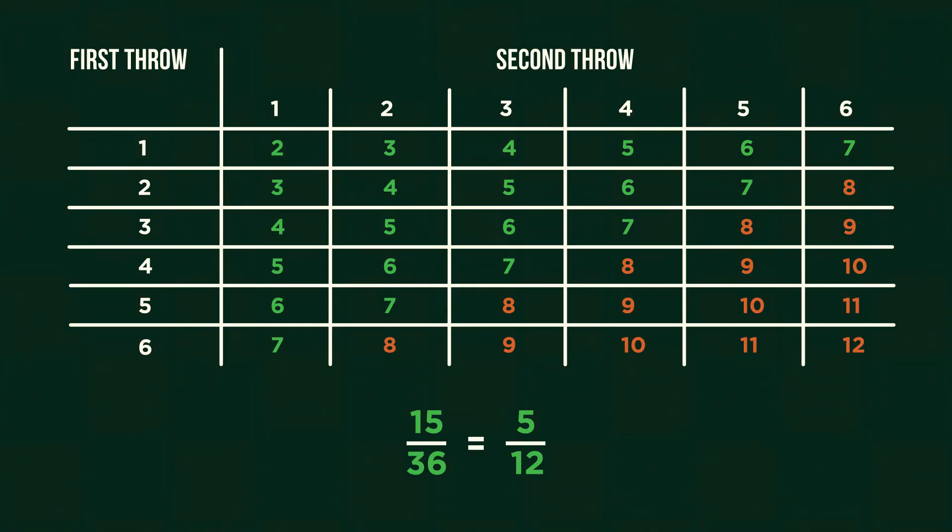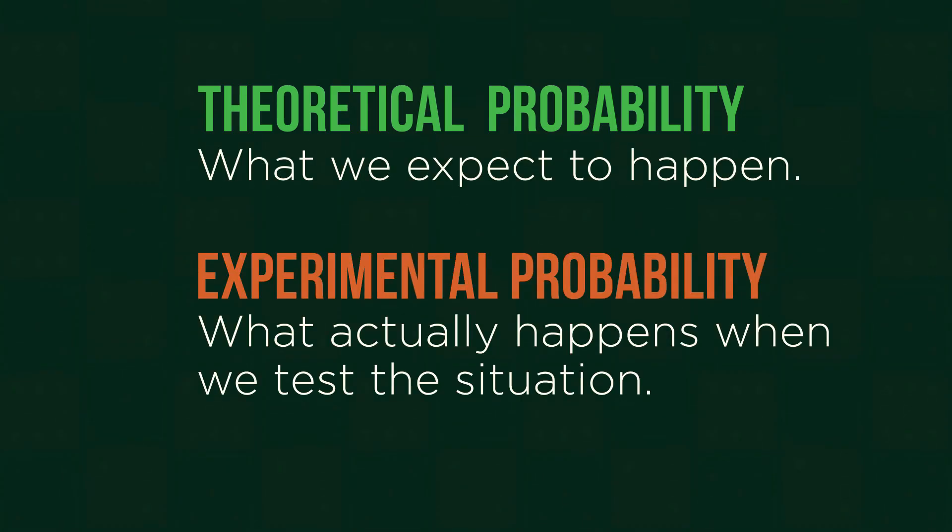These outcomes are of course entirely theoretical. Theoretical probability is what we expect to happen, whereas experimental probability is what actually happens when we test the situation. Generally, the more we try, the closer the experimental probability gets to the value of the theoretical probability.